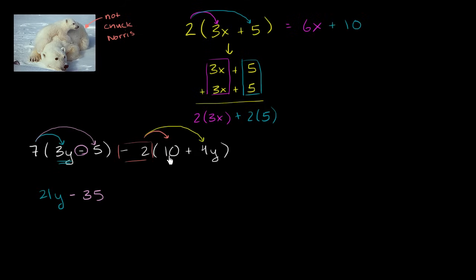So negative 2 times 10, negative 2 times the 10 is negative 20. So it's minus 20 right over here. And then negative 2 times 4y, negative 2 times 4 is negative 8. So it's going to be negative 8y. So let's write a minus 8y right over here.